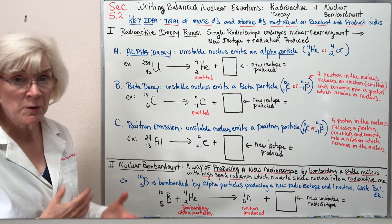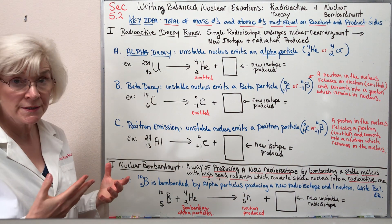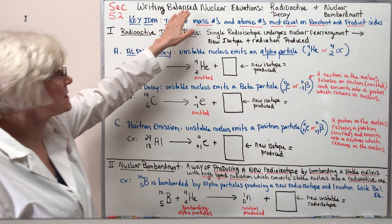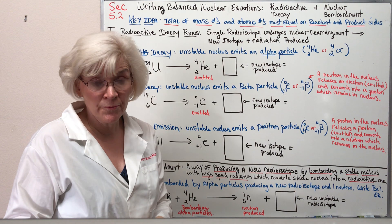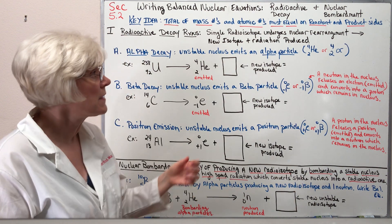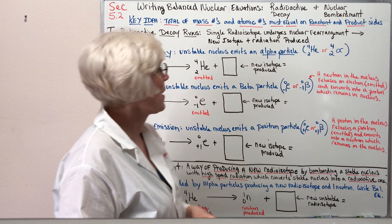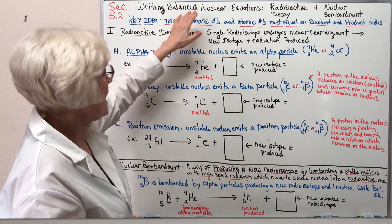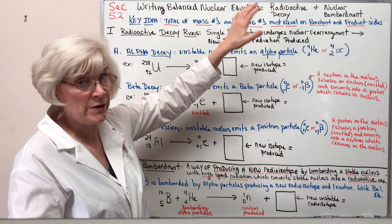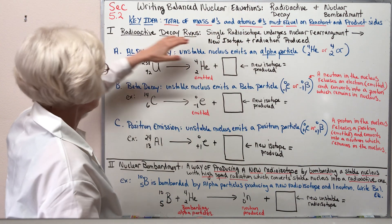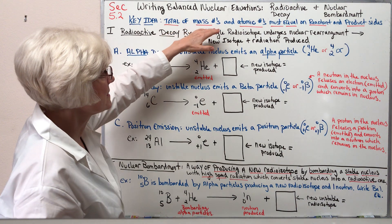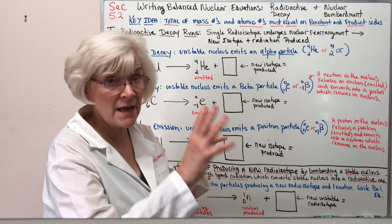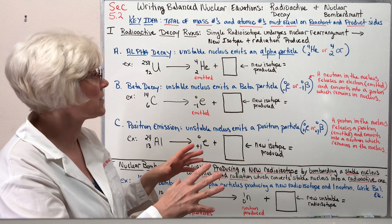In this video segment we're going to look at the very important process technique of how to write a balanced nuclear equation for either a radioactive decay reaction or a nuclear bombardment. The key idea for any type of balanced nuclear equation is that the total of the mass numbers and the atomic numbers must be equal on the reactant and product side of the nuclear equation.